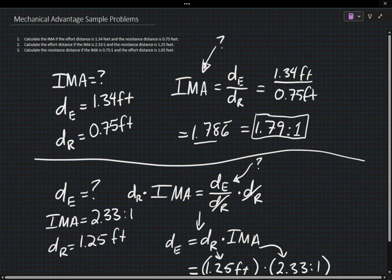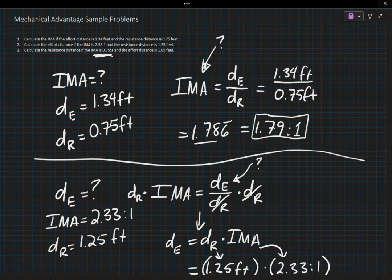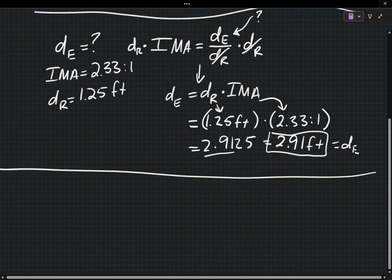Let's look at this third problem. It says calculate the resistance distance if the IMA is 0.75 to 1 and the effort distance is 1.65 feet. Now, before we do anything, let's talk about what this number means. Having an IMA of less than 1 means that it requires more force to move an object than that object actually weighs. And you might be thinking, why would you design a machine that makes it harder to do something? We'll talk about that later in class when we talk about levers. But there is an actual engineering application for doing more work than is required.